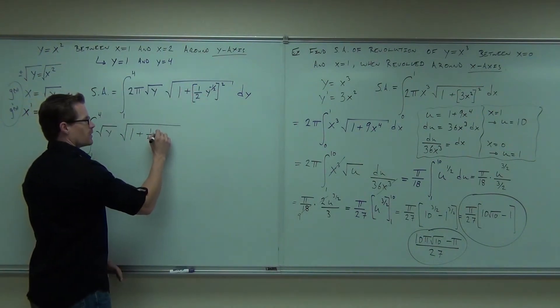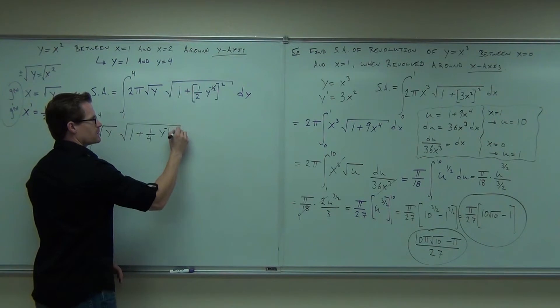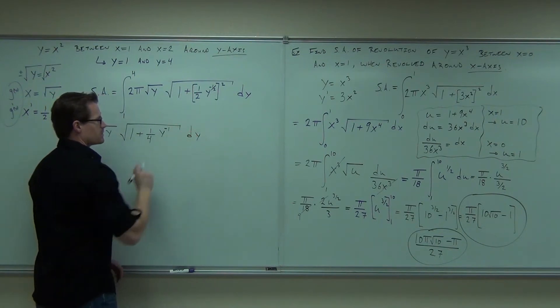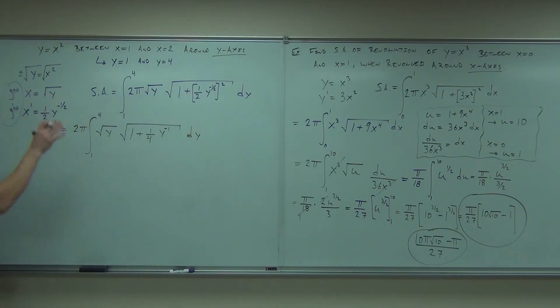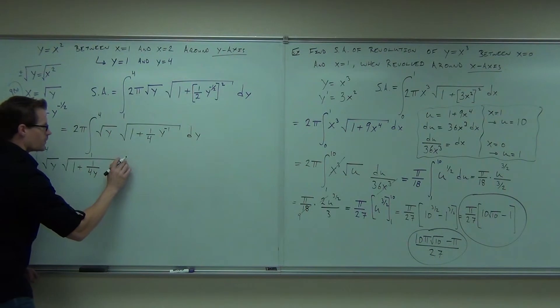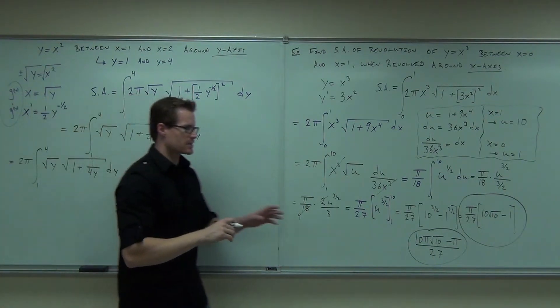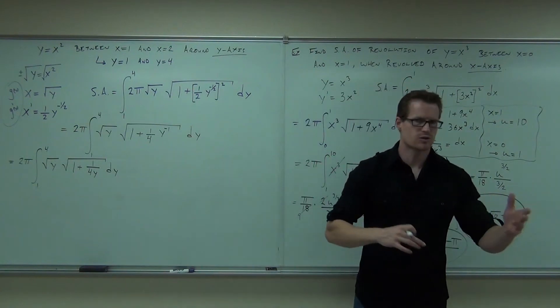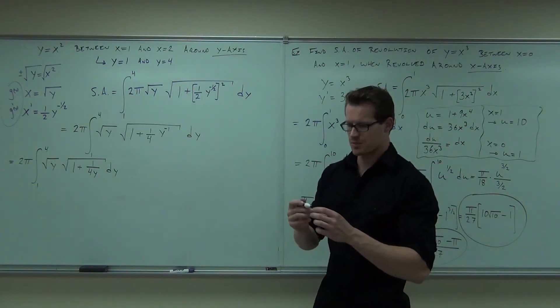So one-fourth, I'll say y to the negative one, just to follow the steps down. What that becomes is two pi, one to four, square root of y, square root of one plus one over four y, dy. Take a look at it, see if you can follow it down. It's a lot of algebra with those negative exponents. I know they can catch it sometimes.